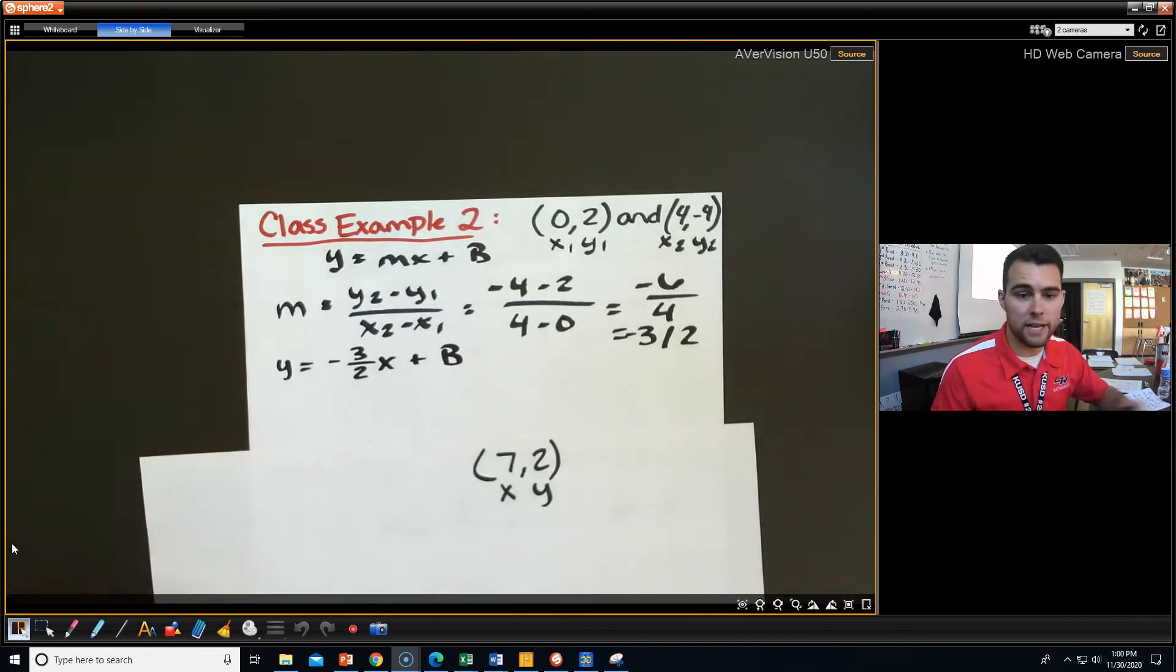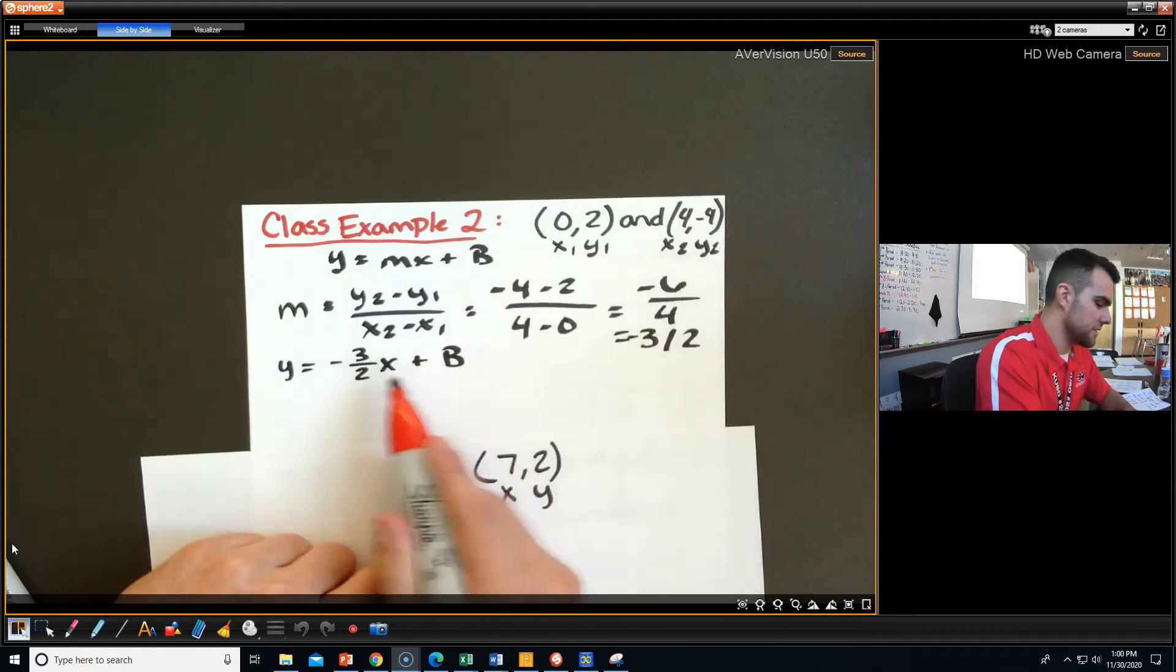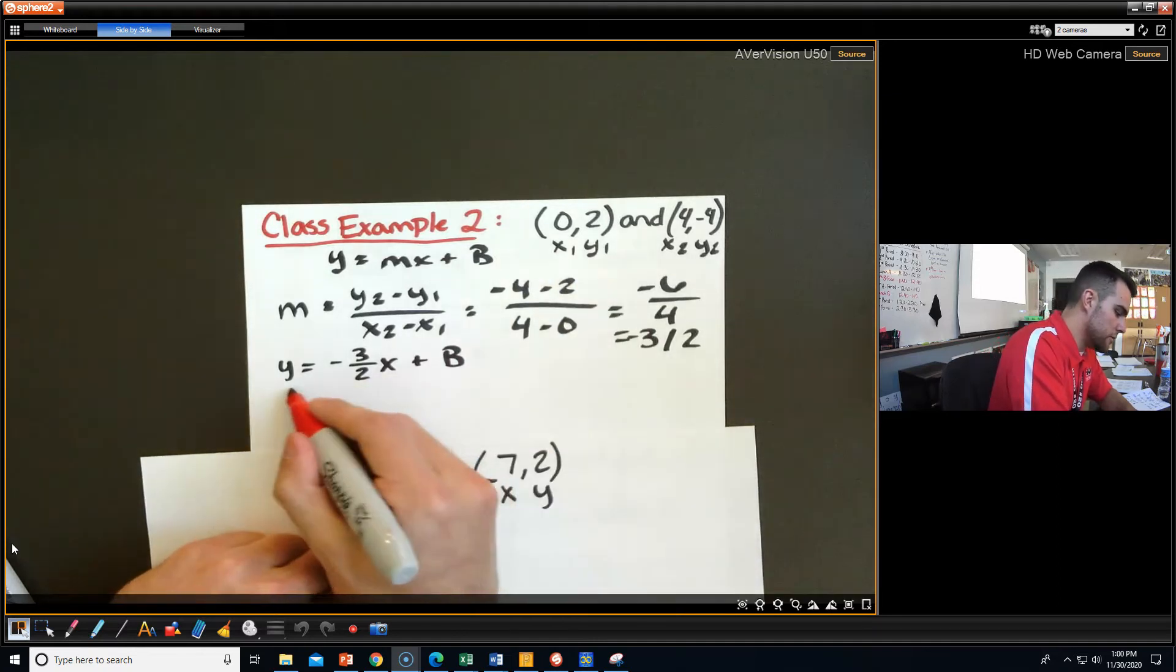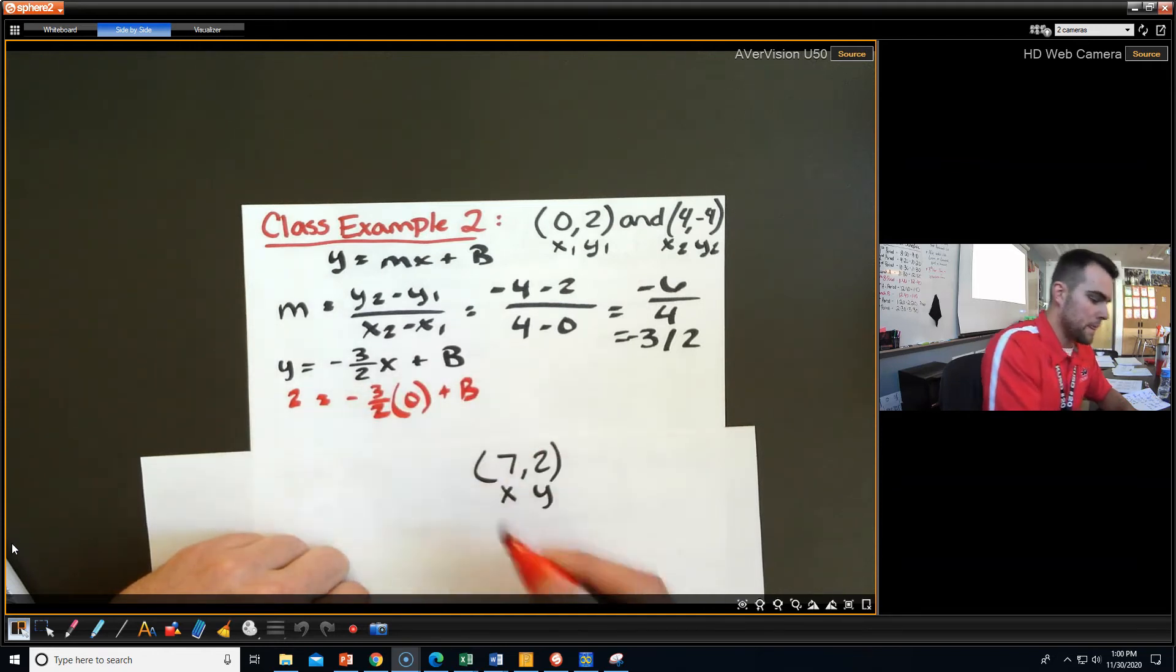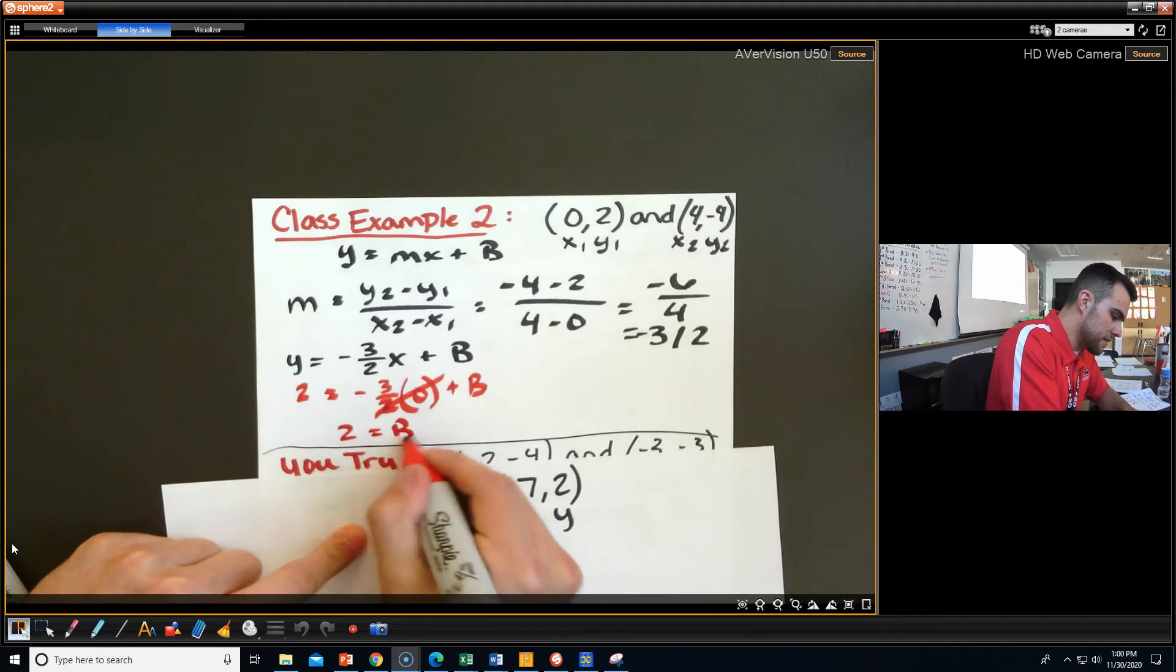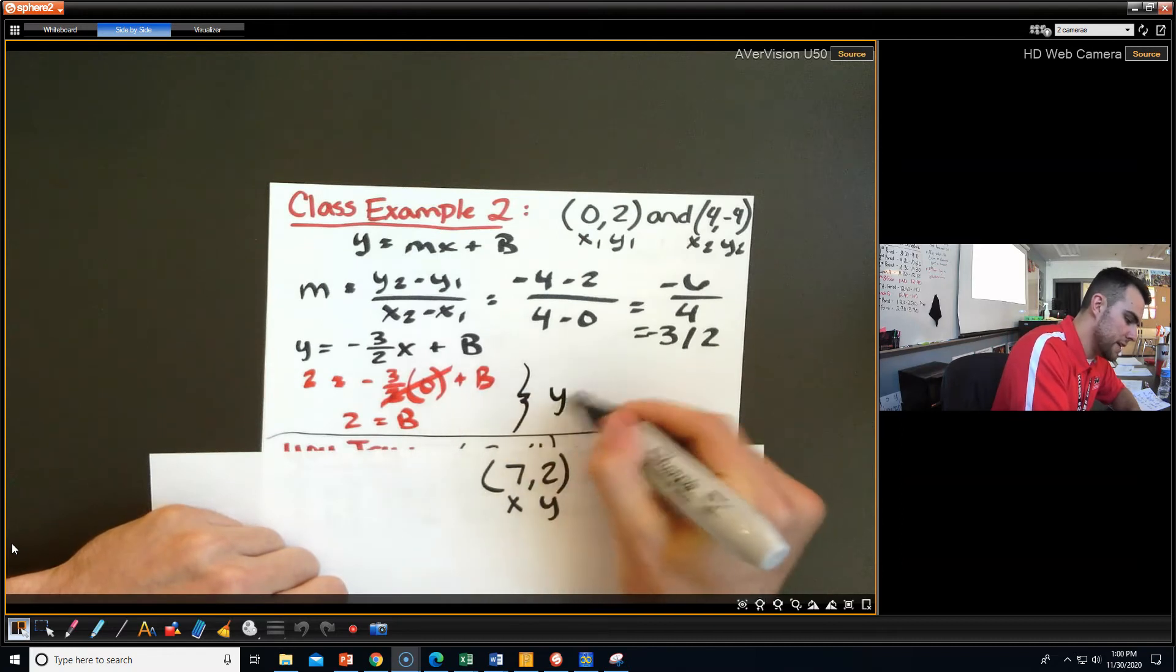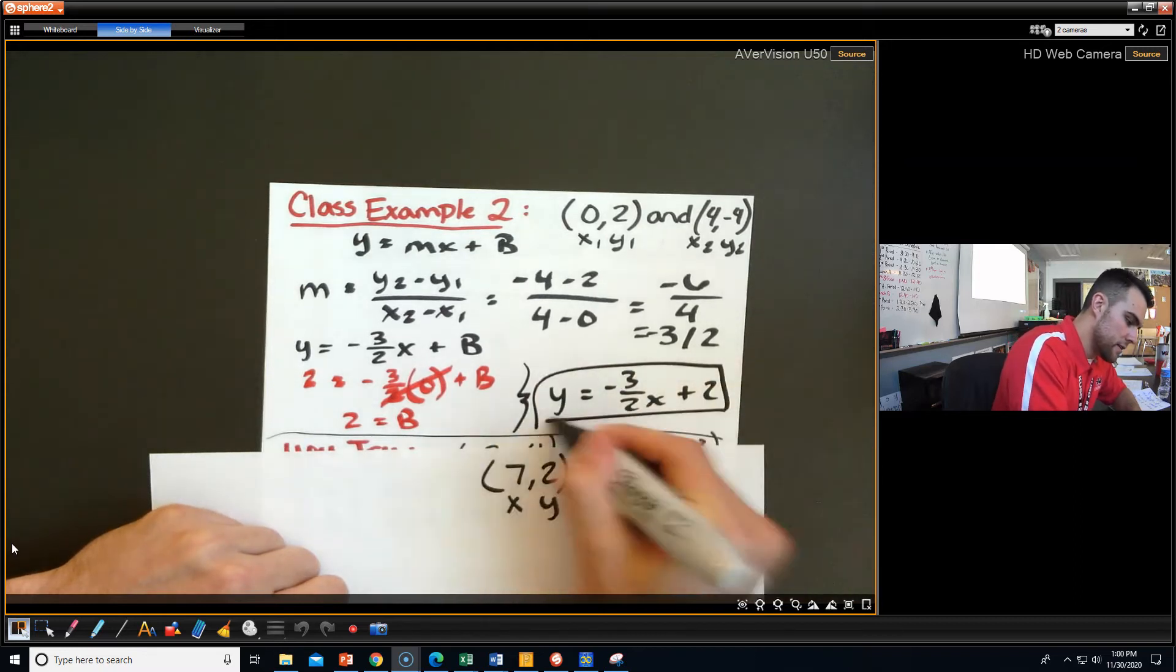And again, it comes down to what points do we want to plug in for x and y to make it so we can solve this as easy as possible. It really doesn't matter. Take your pick. I'm just going to do this one right here because this x is a 0. So if I plug that in, that makes it really nice. So I end up getting 2 equals -3/2 times 0 plus b. Anything times 0 is 0. So 2 is going to equal b. And that's it. So my linear equation is just going to boil down to y equals -3/2 x plus 2.